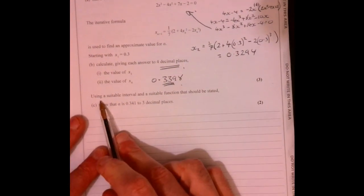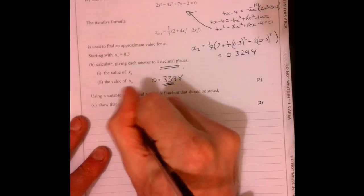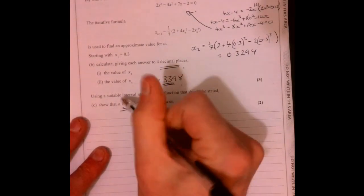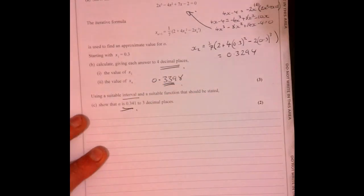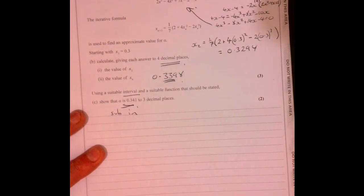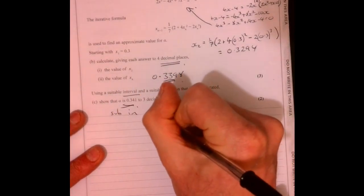Okay, so the last part, it tells us that alpha is this. So it's saying, well, what interval should we use to show this answer?